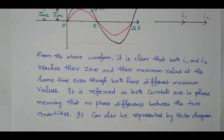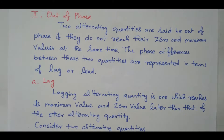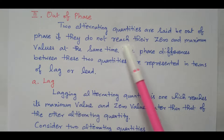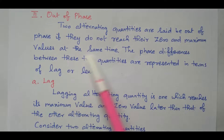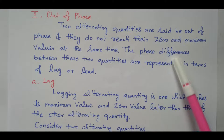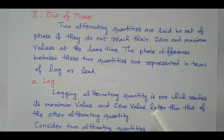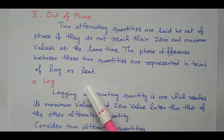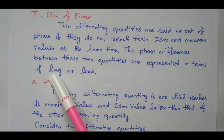Now we will go to the second type: out of phase. Two alternating quantities are said to be out of phase if they do not reach their 0 and maximum values at the same time. The phase difference between these quantities is represented in two forms: lag or lead.